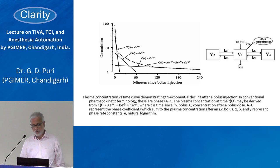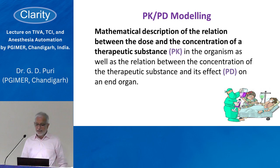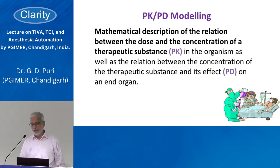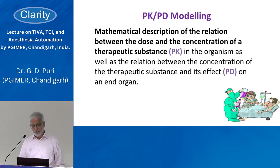You can find the initial concentration by extending the curve back to the Y-axis. The formula describing the relationship between dose and concentration is called a pharmacokinetic (PK) model. The relationship between drug concentration and its effect on an organ — whether the brain or any other target organ — is called the pharmacodynamic model.